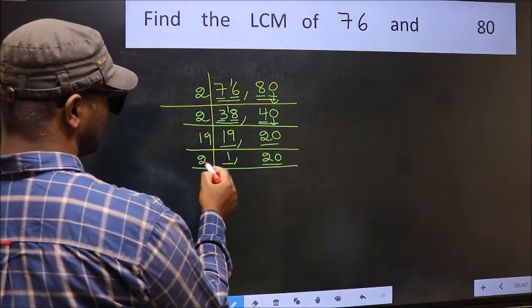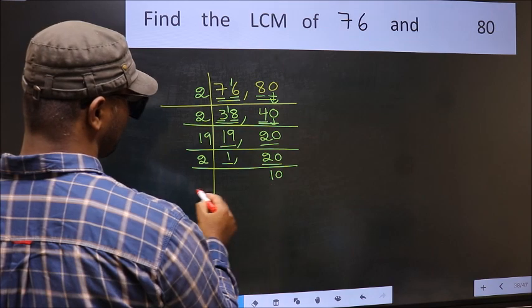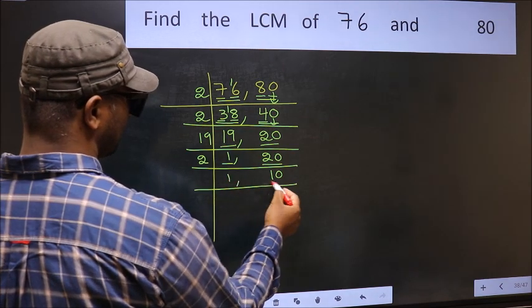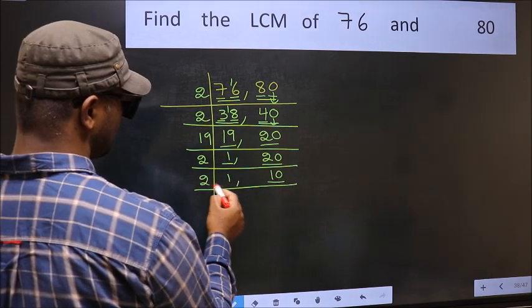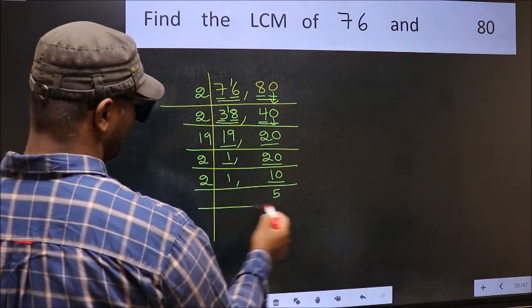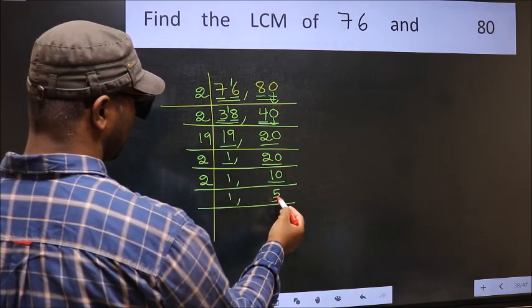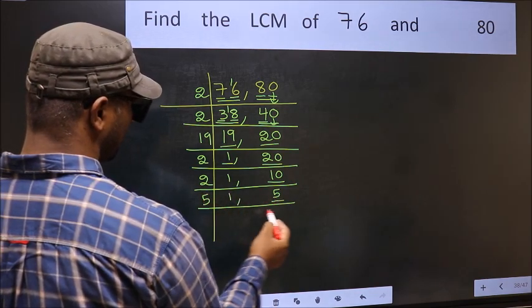20 is 2 times 10. Now we have 10. 10 is 2 times 5. Now we have 5. 5 is a prime number, so 5 once is 5.